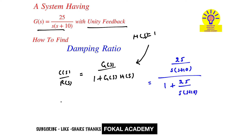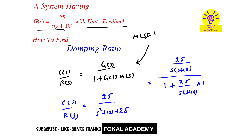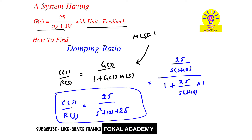Simplifying, we get C(s)/R(s) = 25 / (s² + 10s + 25). This is the closed-loop transfer function.